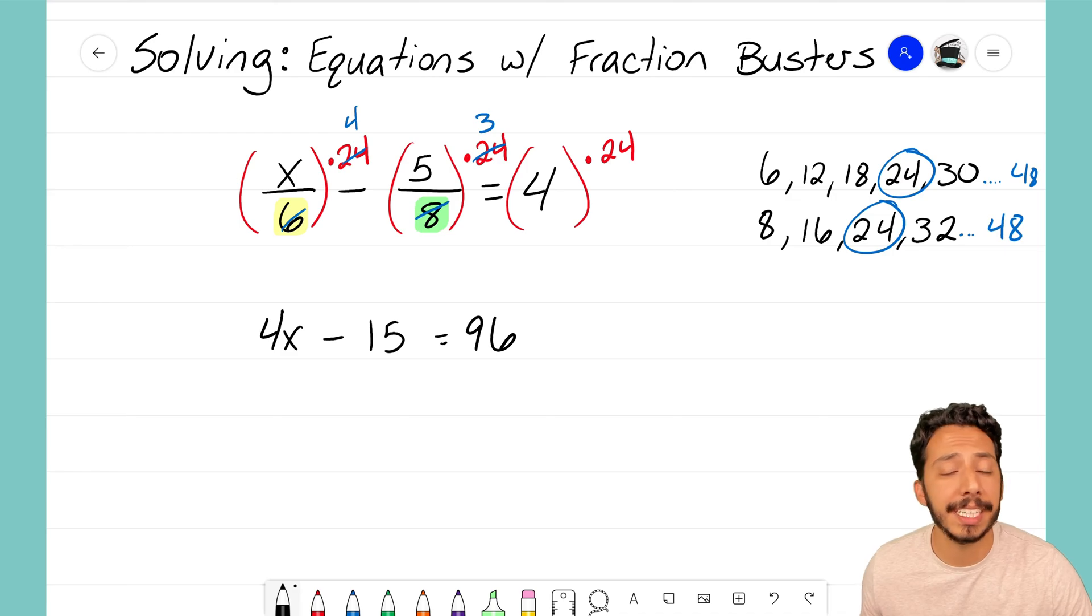That's what fraction busting is all about: getting rid of the fractions so that we have a simple equation to now work with where we can solve for x. Please make a note that you also multiply the term that's not a fraction as well. If you have a number that's not a fraction, you've still got to multiply it